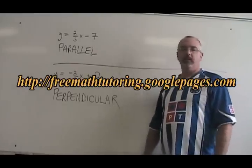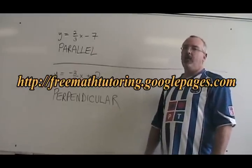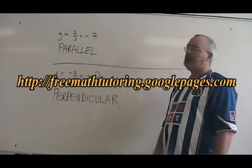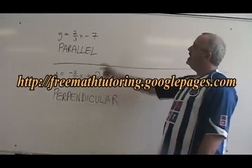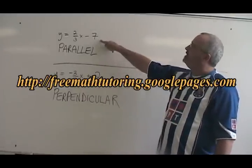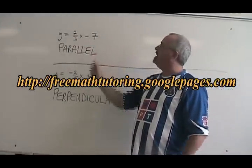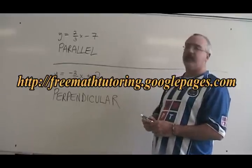In our Secondary 4 Straight Lines 2 course, we have to see the effect of parallel and perpendicular lines on the slope. In this first example, we have a straight line with the equation y equals 2 thirds x minus 7.